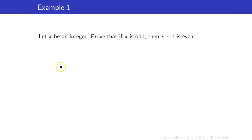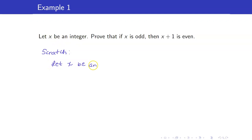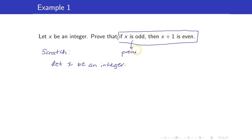Here is our first example. Let x be an integer. Prove that if x is odd, then x plus 1 is even. We will first work through a scratch to see how the proof will look. The hypothesis is that x is an integer. We are proving the implication: if x is odd, then x plus 1 is even. The premise is 'x is odd' and the conclusion is 'x plus 1 is even.'